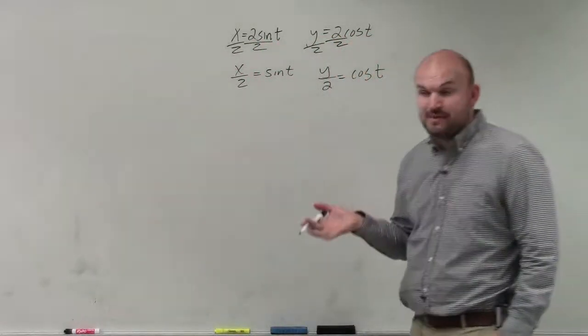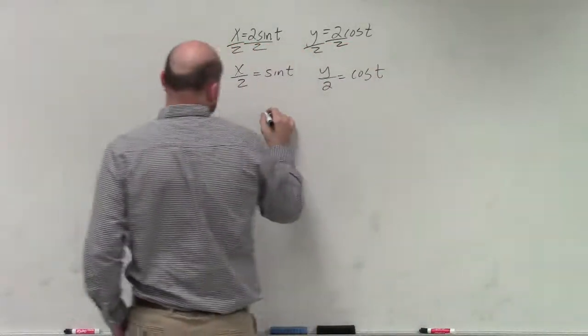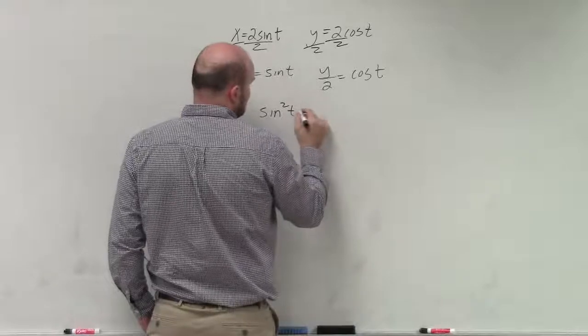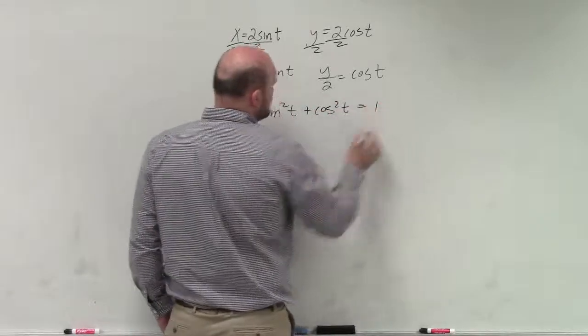And then, if you guys remember, we used that Pythagorean identity, which was sine squared of t plus cosine squared of t is equal to 1.